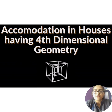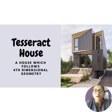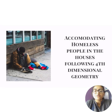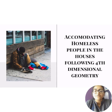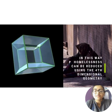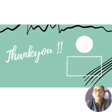That's the reason why houses having 4D geometry can help in accommodating homeless people. The tesseract house, which follows 4D geometry, is made in such a way that the house follows the shape of a tesseract in some parts. The advantage of this tesseract house is that it can accommodate more people and provide more facilities without occupying too much space in our 3D world, which can also serve the conservation of nature. In this way, homelessness can be reduced using 4D geometry in our 3D space.